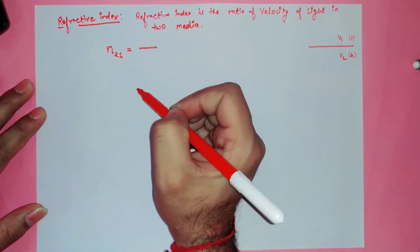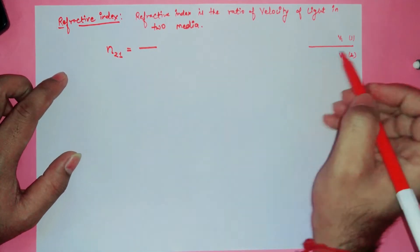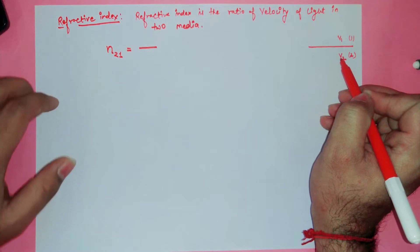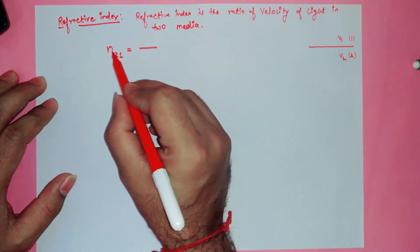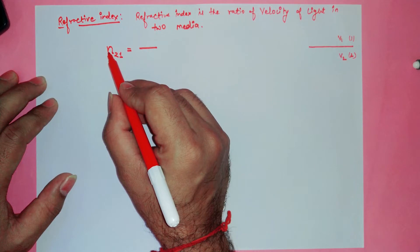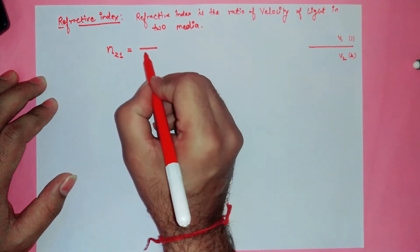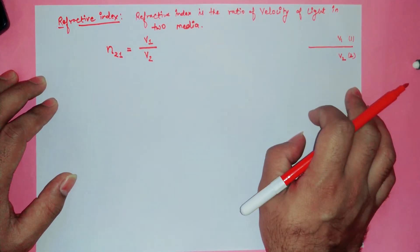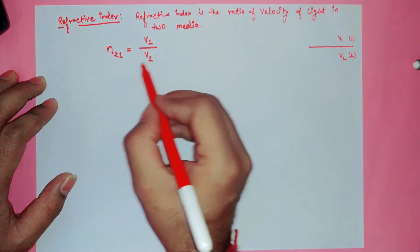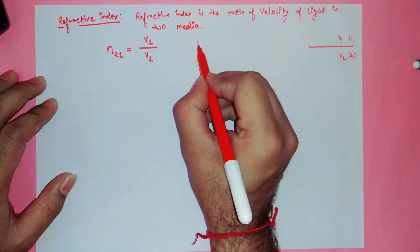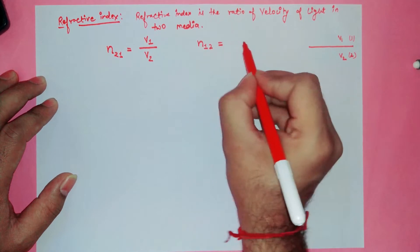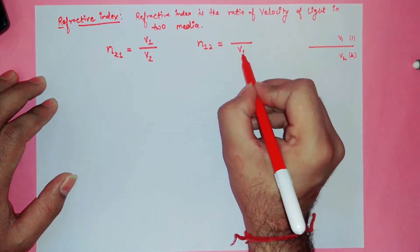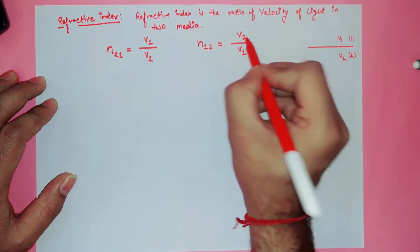For the medium whose refractive index we want to calculate, its velocity should be in the denominator. So for the refractive index of medium 2, v2 should be in the denominator and the other medium's velocity in the numerator. Similarly, if we want the refractive index of medium 1 with respect to medium 2, the velocity of medium 1 goes in the denominator and the other in the numerator.